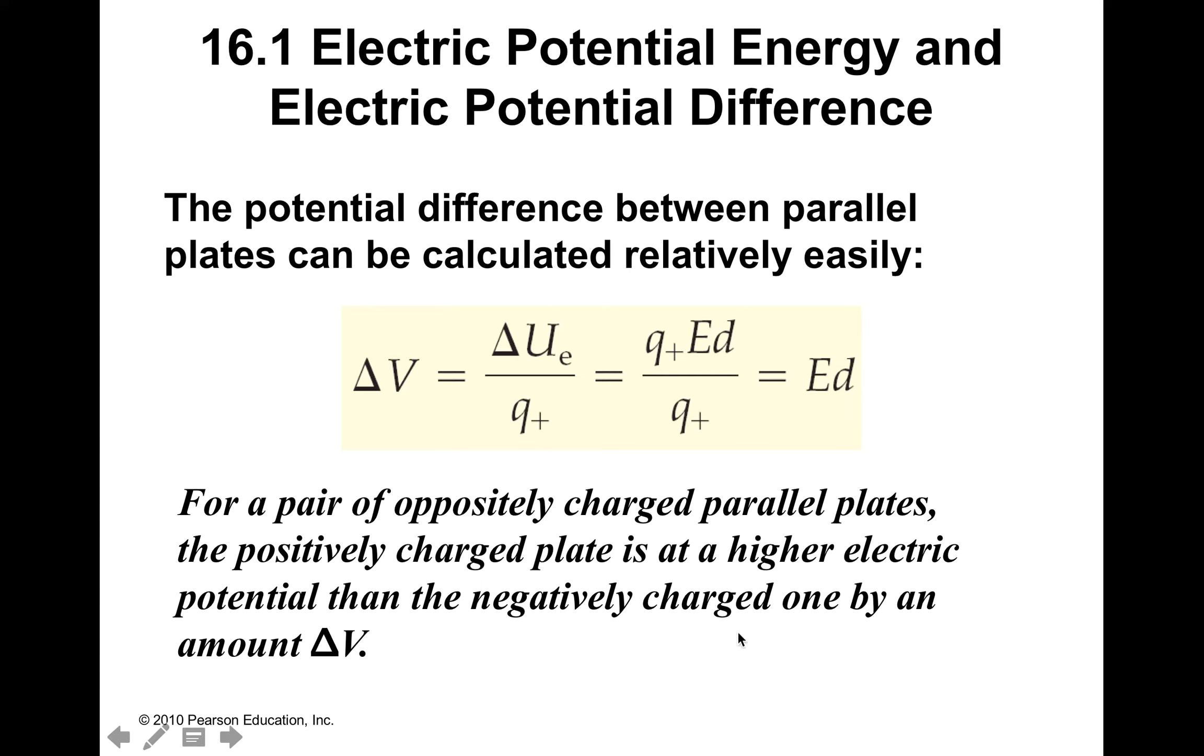So for a pair of oppositely charged plates, the positive charge plate is at a higher electric potential than the negatively charged one. All right, I don't even need to give you - I've got to assign you homework. I just wanted to make sure that you understood that.